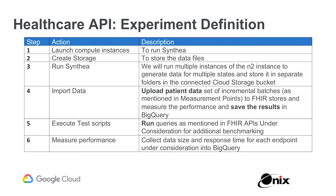Finally, the data gets imported through a compute instance into the FHIR Store using a couple of commands provided through the API. One is the import command, and the second is the create command. If it's a small dataset, we recommend using the create command on a one-off basis. But if you're doing a large insert, you can use the import function, which is much more efficient — you can bundle different sizes of records and execute the bundle through the import, making it far more efficient to load data into the FHIR Store quickly.